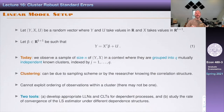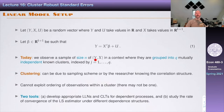We're going to have a linear model. The idea is that we observe a sample of size N of Y and X in a context where they are grouped into Q mutually independent known clusters, indexed today by the letter J. Clustering can be due to the sampling scheme or because the researcher knows the correlation structure.